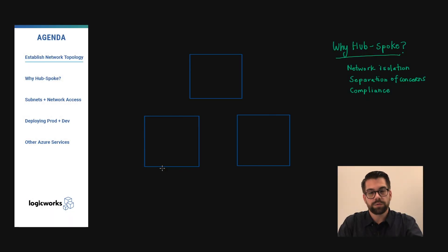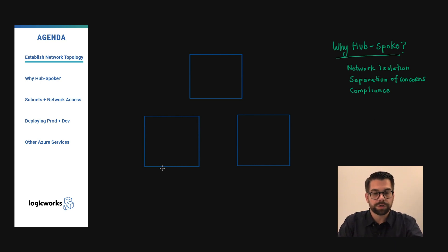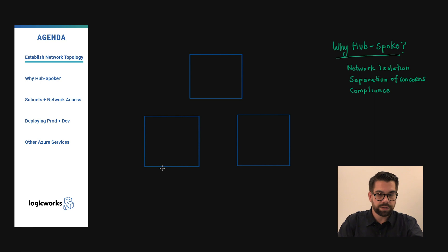The first step is to establish our networking topology. Rather than deploying all of our Azure resources within one virtual network, we are going to create several virtual networks and separate them by SDLC tier. In this example, we have two SDLC tiers: dev and prod.